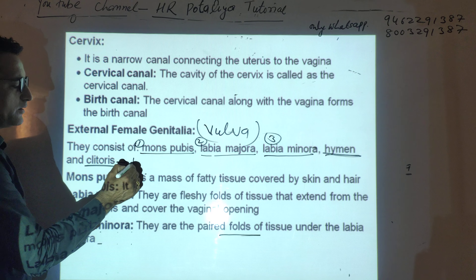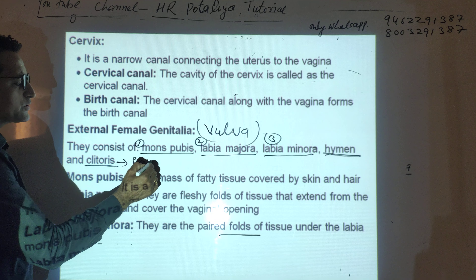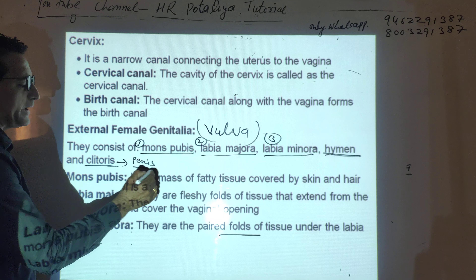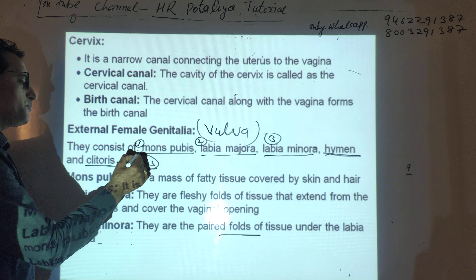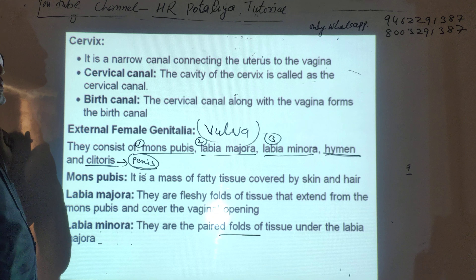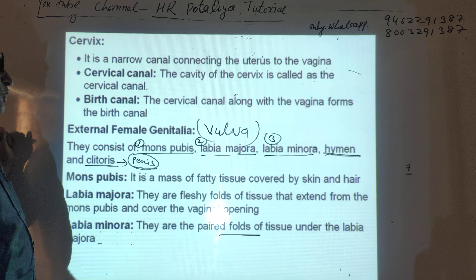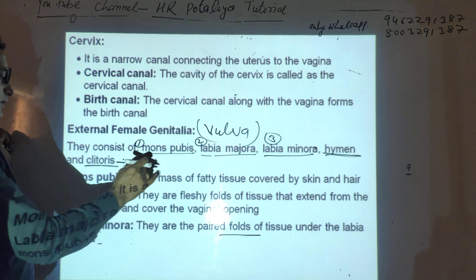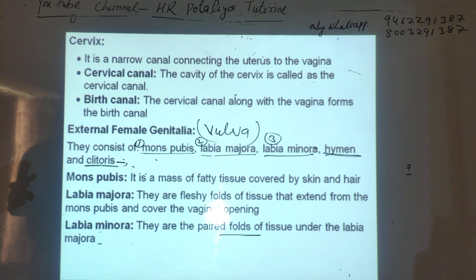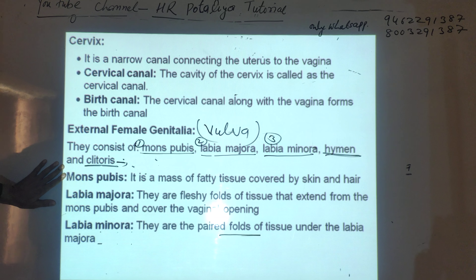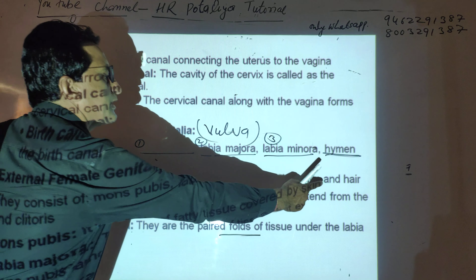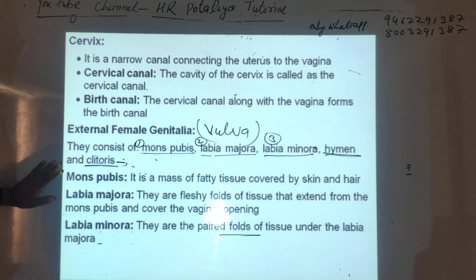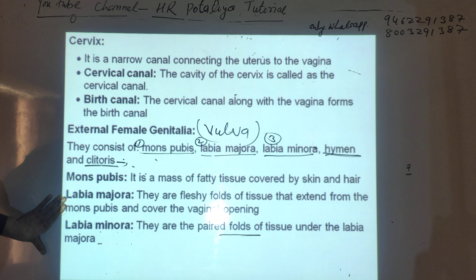The clitoris is formed by the fusion of both lobes and is a small structure. The clitoris is the homologous organ of the penis in males. So the external genitalia consist of: mons pubis — mass of fatty tissue with skin and hairs; labia majora — fleshy folds extending from mons pubis to the vaginal opening; labia minora — fold of tissue under the labia majora.